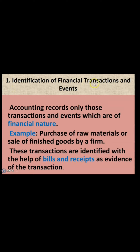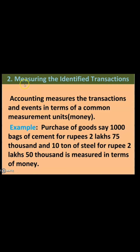First, you have to identify whether the transaction is financial in nature. Then, after identifying, you are supposed to measure that identified transaction in some money value. Accounting measures the transaction and events in terms of a common measurement unit — that is money. For example, when you purchase 1,000 bags of cement for Rs. 2,75,000, or 10 tons of steel for Rs. 2,50,000, that can be measured in terms of money.